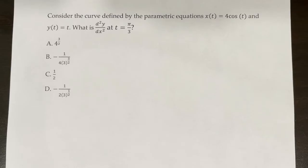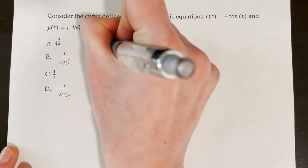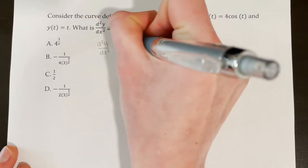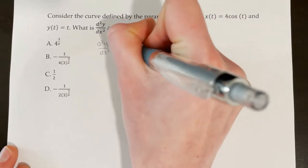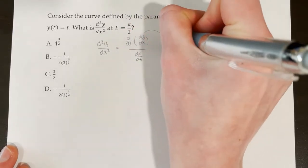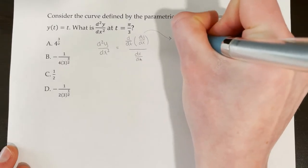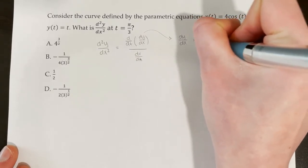Consider the curve defined by x of t equals 4 times the cosine of t and y of t equals t. What is the second derivative of y with respect to x at t equals pi over 3? First I'll find the second derivative, then plug in t equals pi over 3. To find the second derivative of parametric equations, we use d dt of dy dx, all over dx dt. This involves finding the first derivative dy dx using dy dt over dx dt.